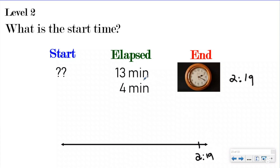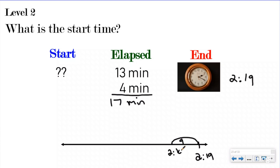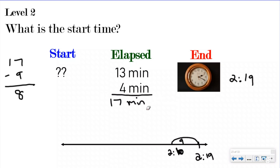It gave me two different elapsed times: I did something for 13 minutes and then something for 14 minutes. Before I do anything, I want to add those up — so I know my total elapsed time is 27 minutes. The first thing I want to do working backwards is find the next friendly number, which ends in a zero. Going from 2:19, my next friendly number would be 2:10. So I need to make a 9-minute jump, and that's going to take me to 2:10. I had 27 minutes of elapsed time, and I took away 9, so that left me with 18 minutes left.